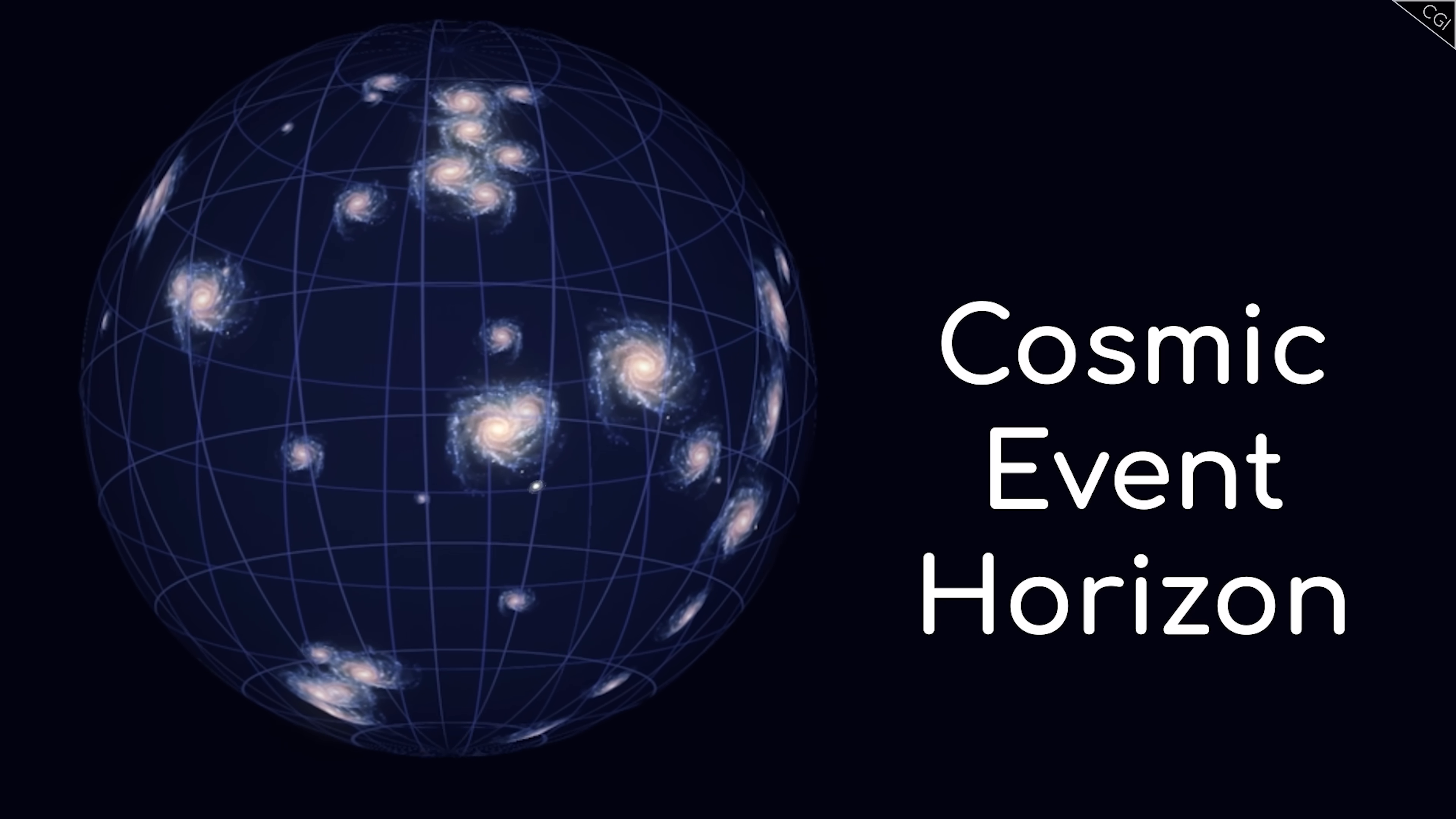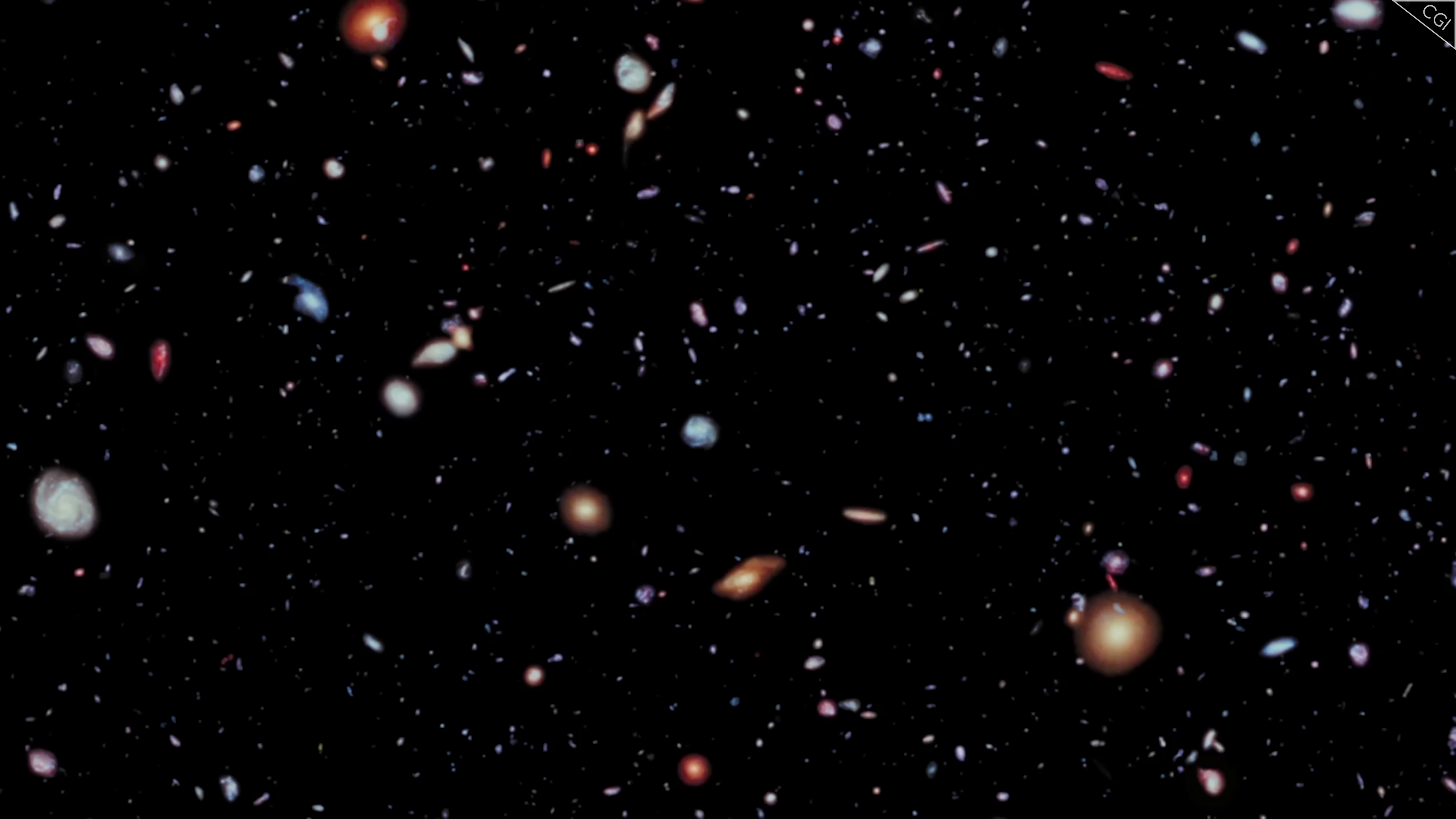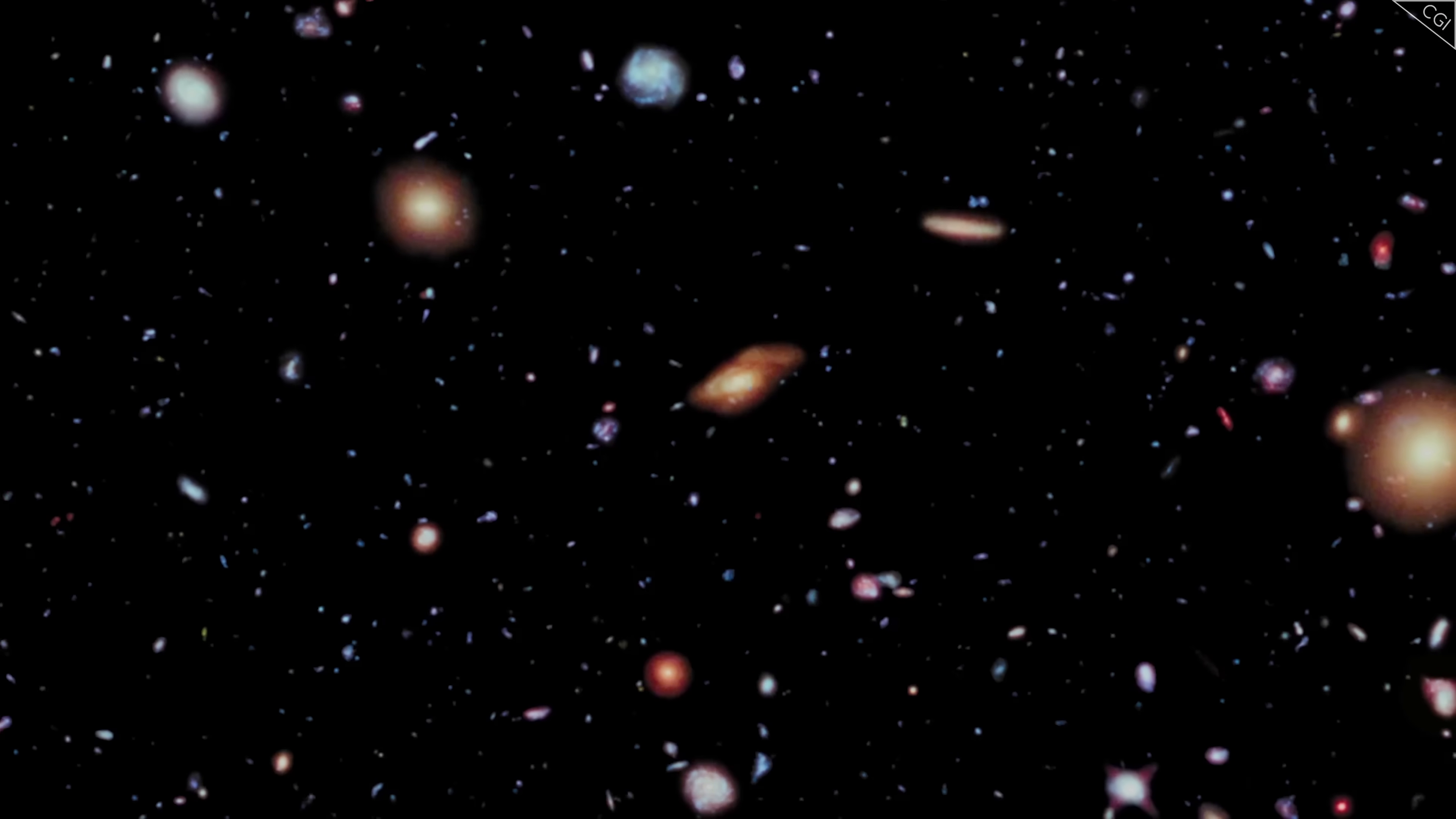Just like with a black hole, once you cross this point, you can no longer communicate or interact with the world you've left behind. That means that, one by one, we'll lose contact with all galaxies beyond the local few where gravity is strong enough to keep us close. All that will remain of them is a dimming, reddening light from the moments before they crossed the Event Horizon.